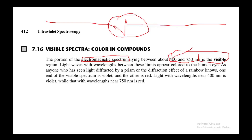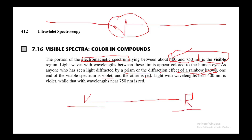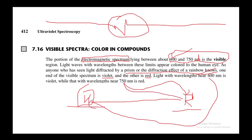There is a region ranging from 400 to 750 nanometers called the visible region. Light waves with wavelengths between these limits appear colored to the human eye. As with a rainbow or diffraction effect, one end of the visible spectrum is violet and the other is red. Light with a wavelength near 400 nanometers is violet, while 750 nanometers is red — red has the highest wavelength and violet the lowest.